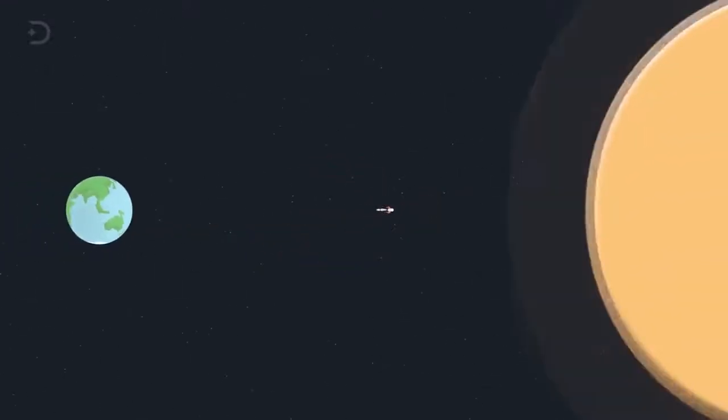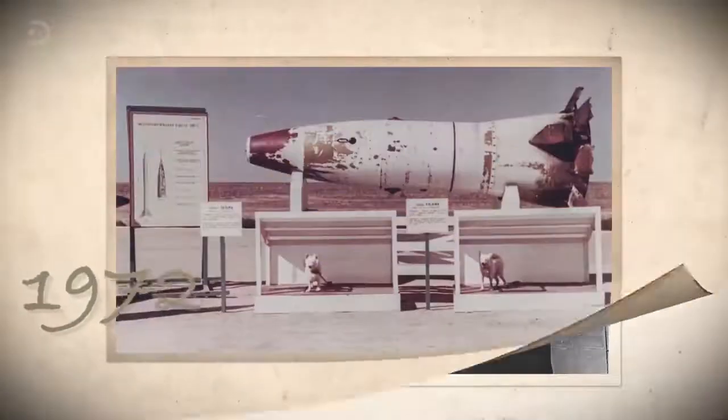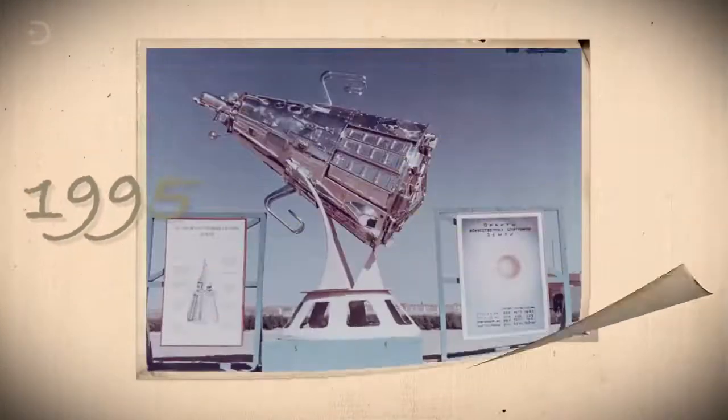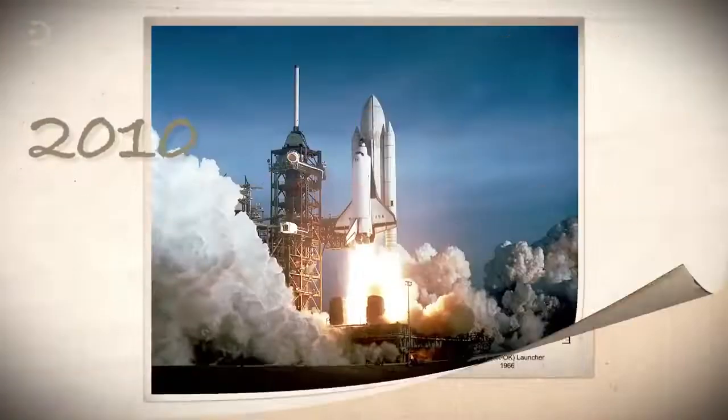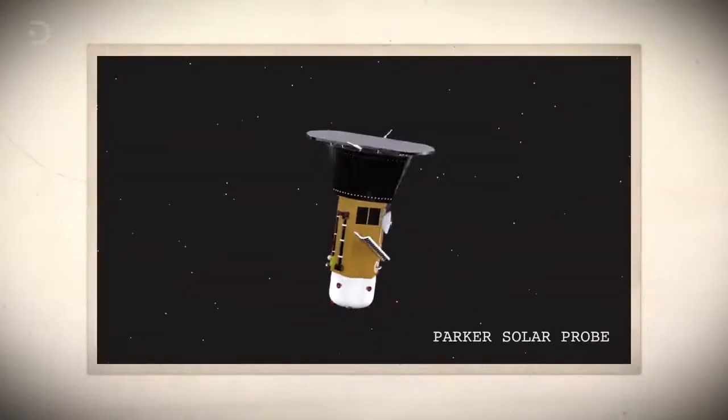But that doesn't mean we can't send something close to the Sun to study it. Scientists have been waiting for over 60 years for technology to advance enough so that we can get a closer look. That is where the Parker Solar Probe comes in.